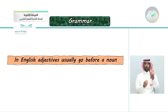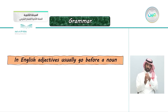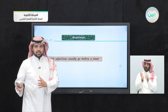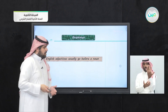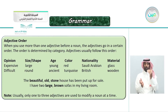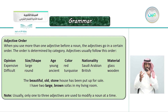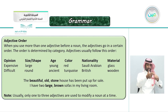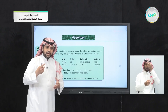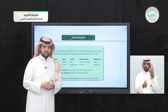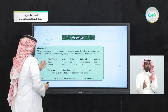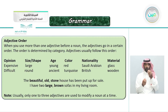In English, adjectives usually go before a noun. We know that the adjective comes before a noun. For example, we say a big house, a beautiful garden, a large tree, and so on. When you use more than one adjective before a noun, the adjectives go in a certain order. So when we want to describe a thing using more than one adjective, maybe two or three, there's a specific order for them.